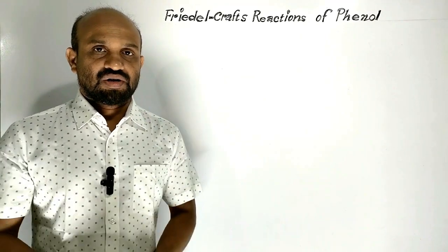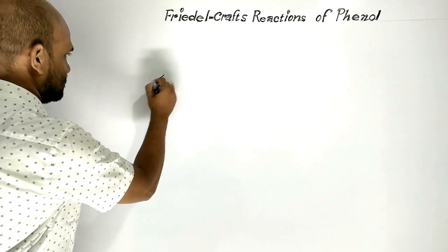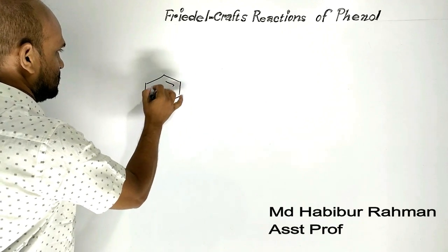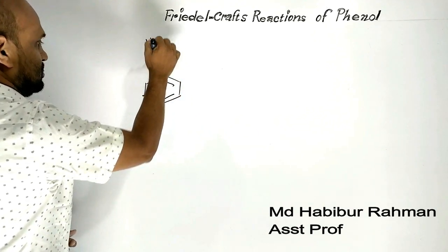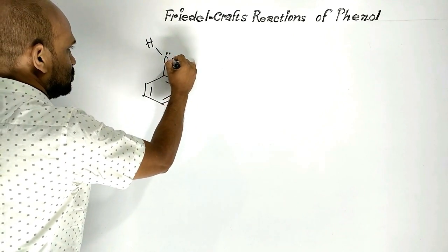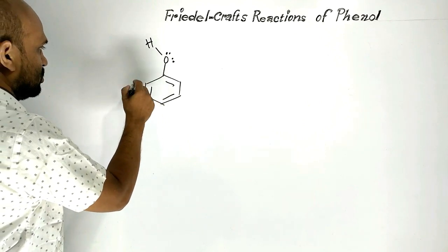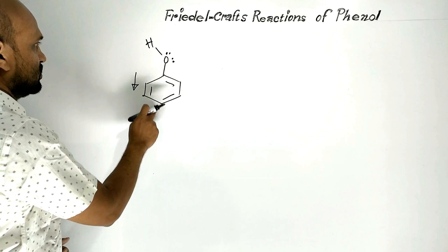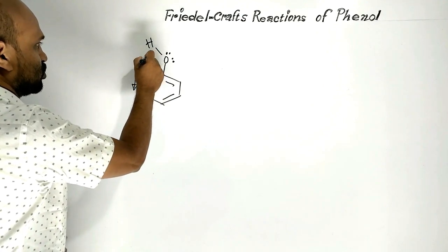First of all, let us try to know about phenol. Oxygen carries two lone pairs of electrons, and we know the phenyl group is a kind of electron withdrawing group. The hydroxyl group is a kind of electron donating group.